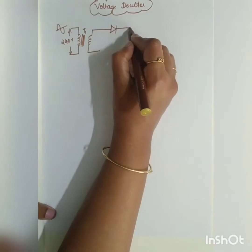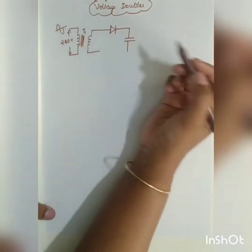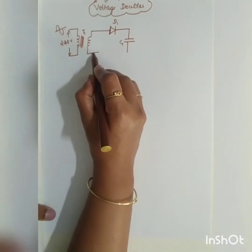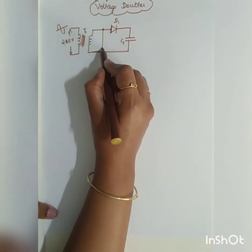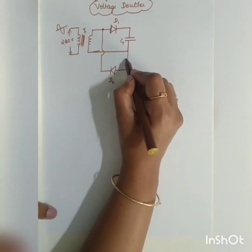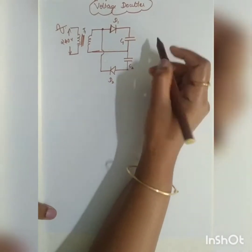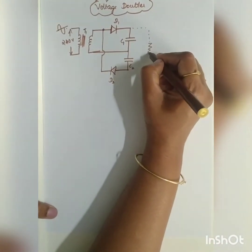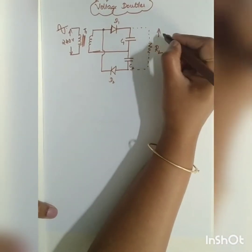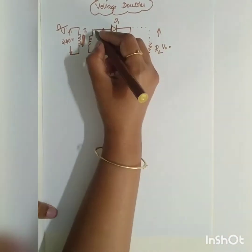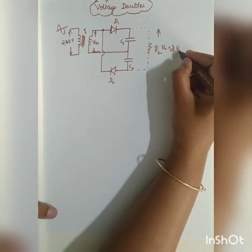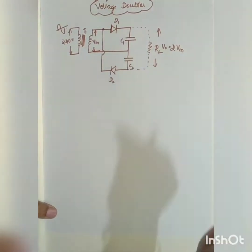With diode D1 and capacitor C1 you get a half-wave rectifier. Now if you add one more diode D2 along with one capacitor C2, you can double the output voltage. So the output voltage V0 will be equal to 2Vm, where Vm is the maximum input voltage.